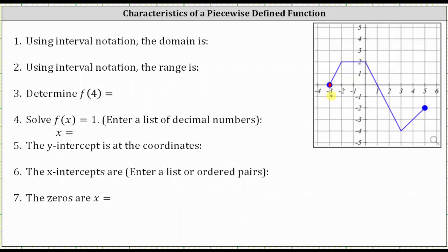Notice the rightmost point on the function is where x equals five. Again, the point is closed, and therefore x equals five is in the domain. From x equals negative three to x equals positive five, there are no holes or breaks in the graph, and therefore the domain is the closed interval from negative three to positive five, which we indicate using interval notation as open square bracket, negative three, comma positive five, closed square bracket. Remember, if the endpoints were not included, we would use parentheses rather than square brackets.